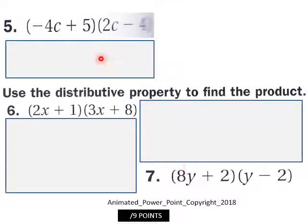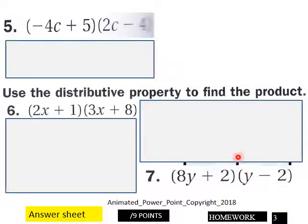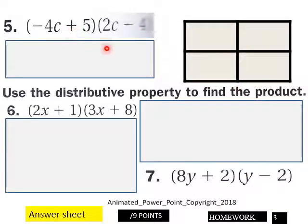And then page three again, using the table up here, then use distributive property to find the products down here. Six here, seven up here. You got nine points here on page three. There's your table for number five.